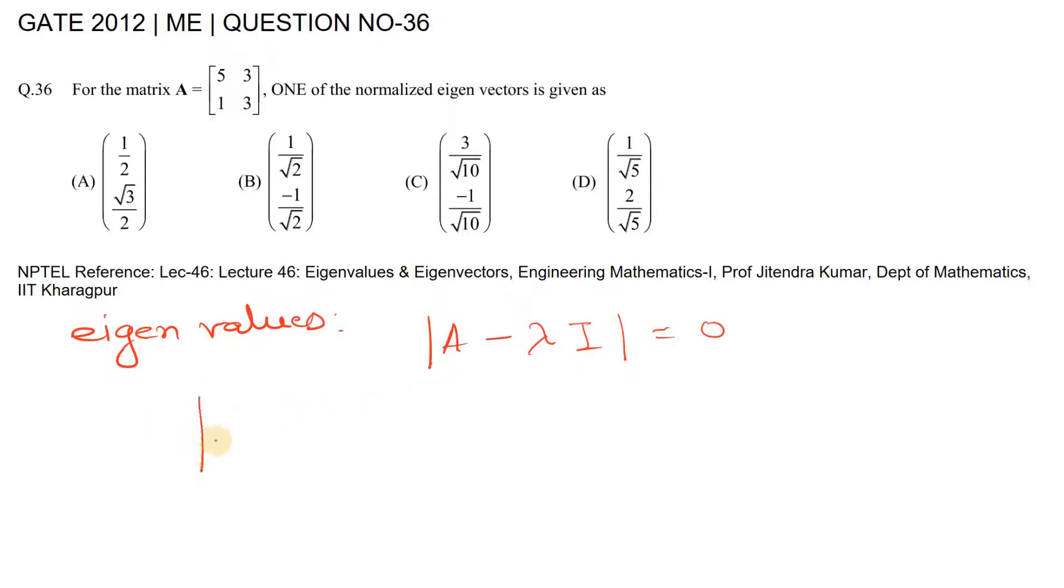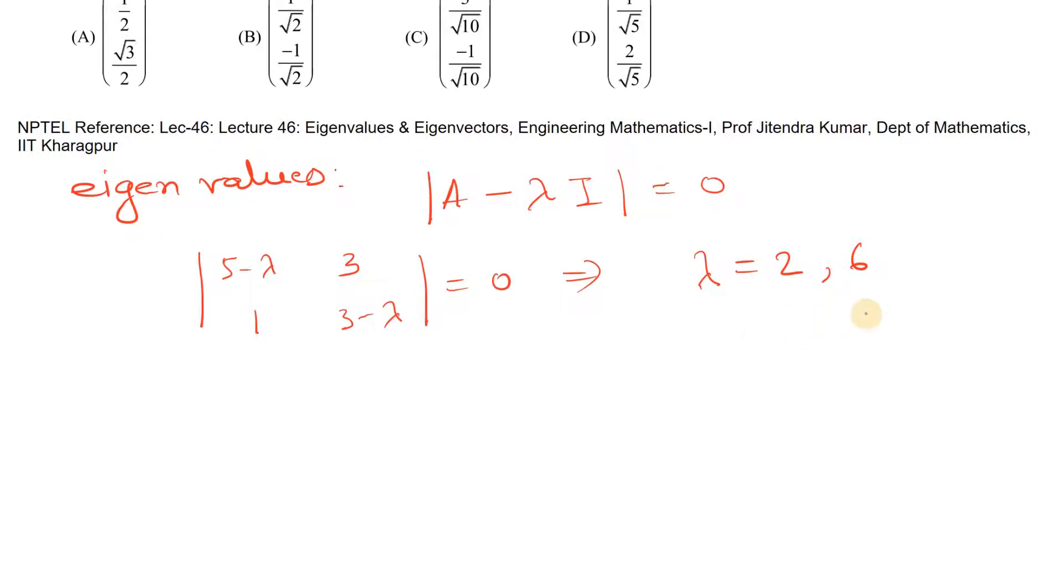Let's write: 5 minus lambda, 3, 1, 3 minus lambda. The determinant of this should be equal to zero. And from here, we can get the two values of lambda as 2 and 6. If we solve this, we'll get 2 and 6.